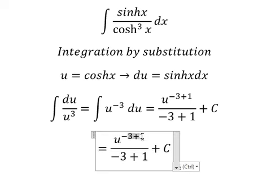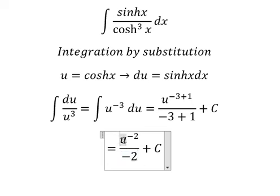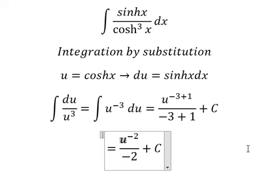The denominator is negative 2, where u equals cosh x.